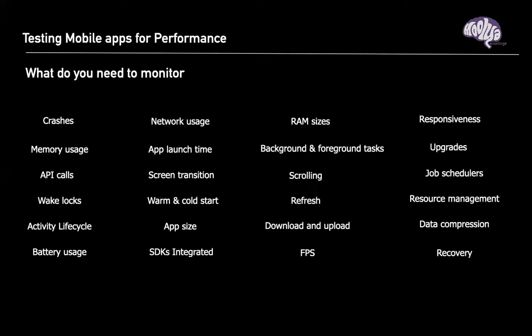Let's start addressing the problem. It's important that we understand performance matters, but we need to see how much importance we're actually giving to performance and what we're doing about it when testing. These are the things you need to monitor for performance: there are things like job schedulers, resource management, data compression algorithms, and libraries being used — all leading to app performance issues.